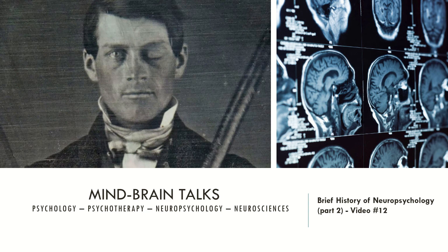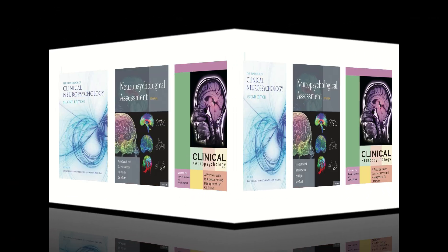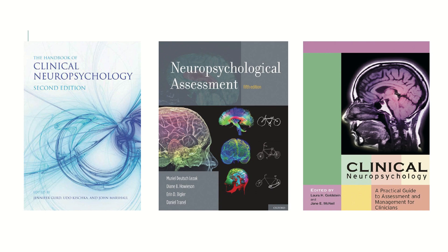Now let's look at the manuals I recommend today. The first is the Principles of Neuropsychology. The second is the Fundamentals of Human Neuropsychology. The third is the Neuropsychology Handbook. The fourth is Clinical Neuropsychology, second edition from Jennifer Ward and John Marshall. The fifth is the Neuropsychological Assessment Form from MESAC. And the sixth is Clinical Neuropsychology: A Practical Guide to Assessment and Management for Clinicians.